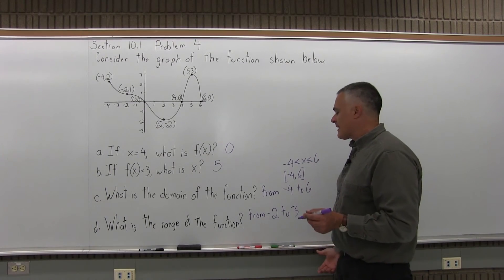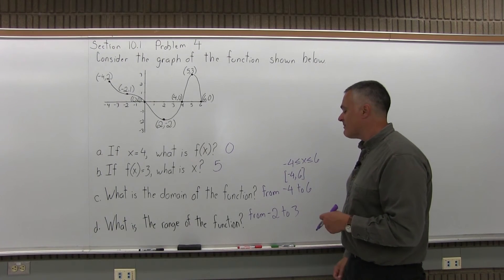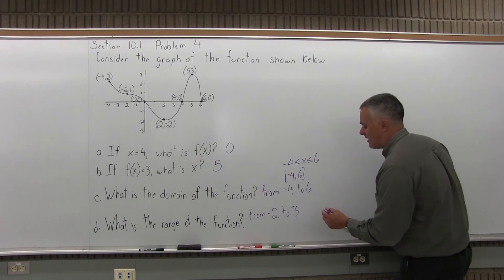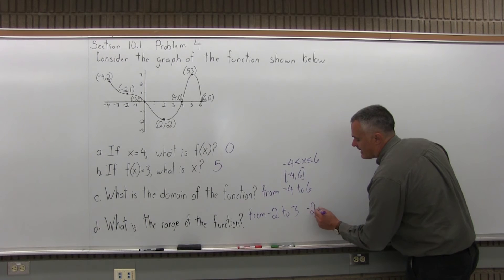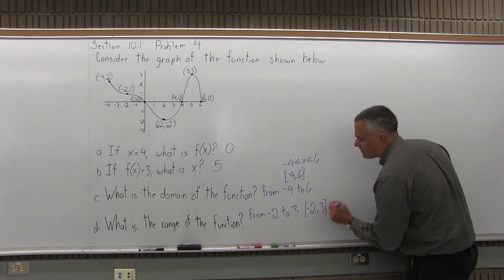And again, in class, if you wrote this on an exam or quiz, I'd give you credit for that. It's not the most mathematical way you could write it. You could write it negative 2, comma, 3 with a bracket on the negative 2 and a bracket on the 3.